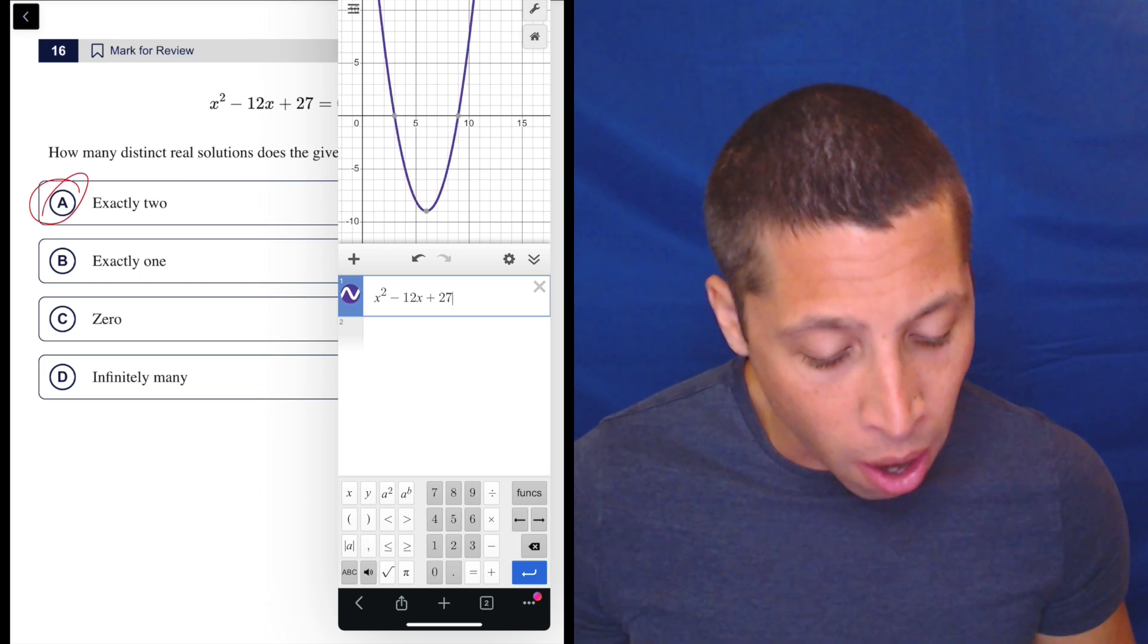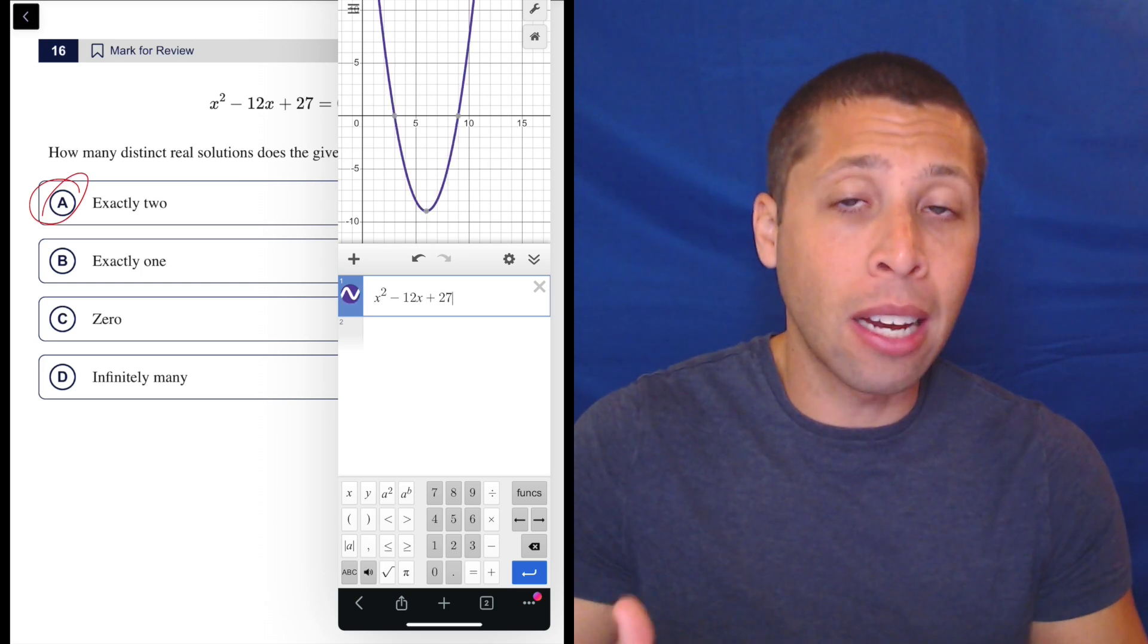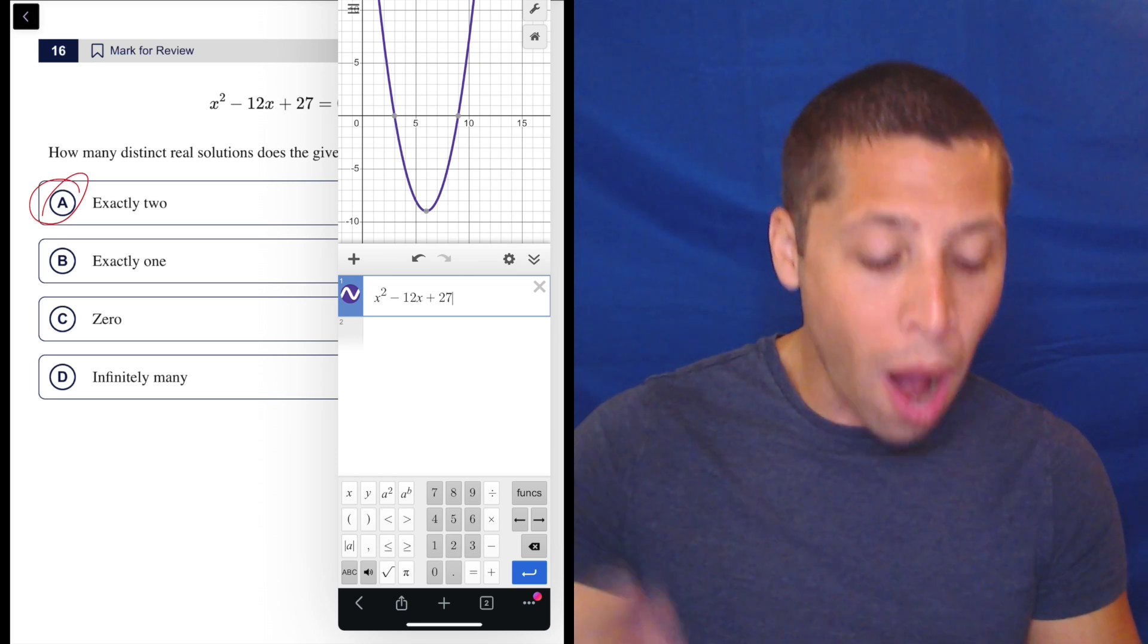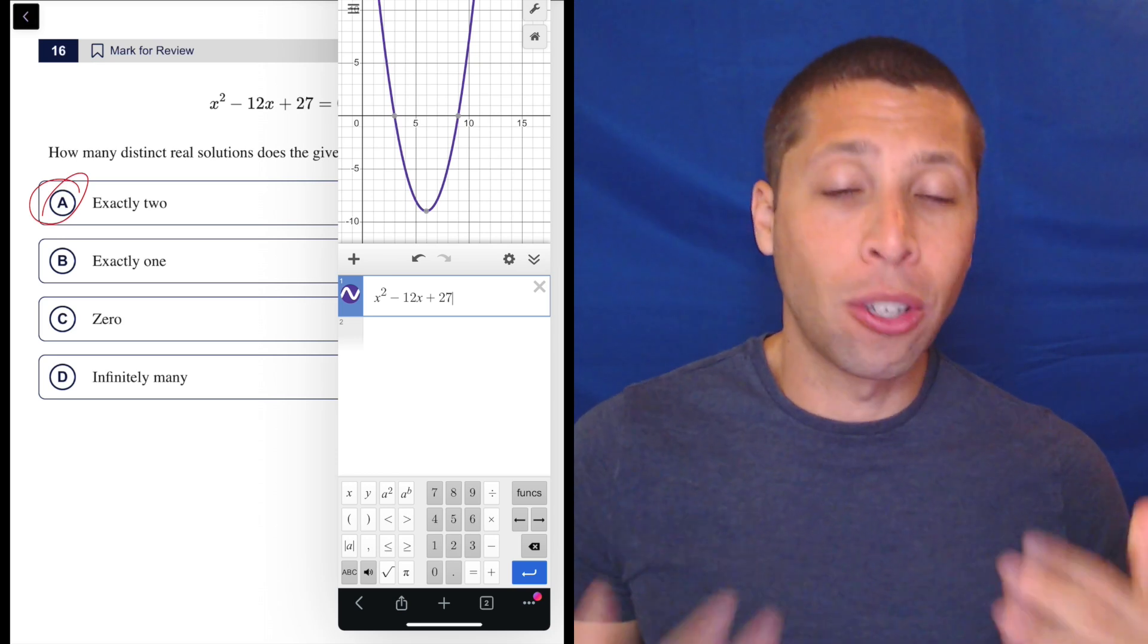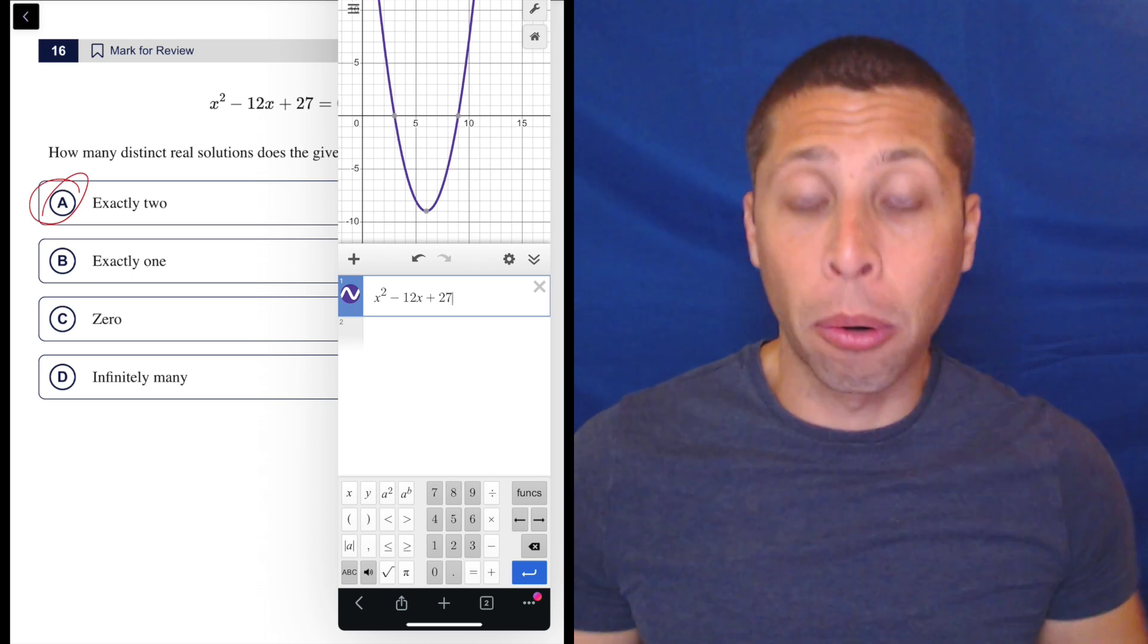If we leave the zero off, it's basically thinking of it as like a y. So this is y equals x squared minus 12x plus 27, which is why it's graphing it as an actual parabola.